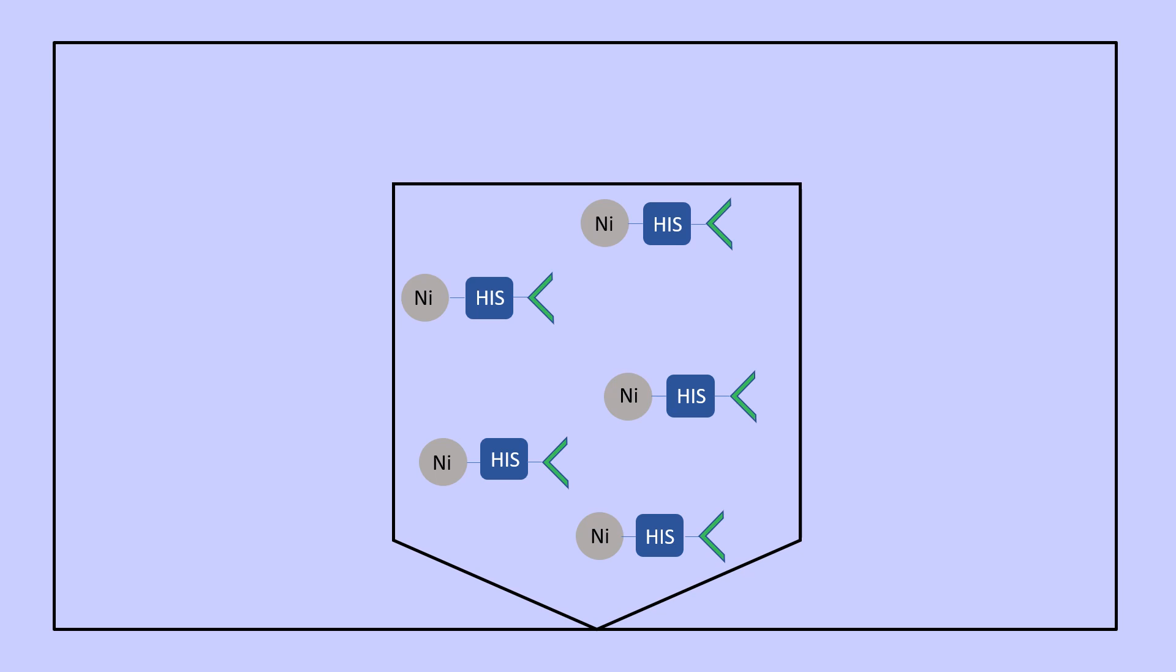In this example, we will be using a histidine-tagged bait protein bound to a nickel resin. The cell lysate containing the prey protein, which may or may not interact with your bait protein of interest, is co-incubated with the resin to allow for binding. Any unbound proteins are washed away.